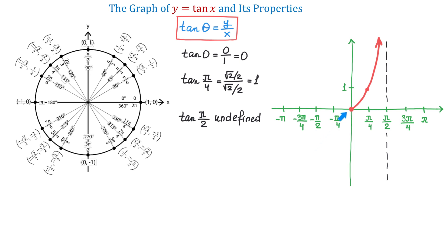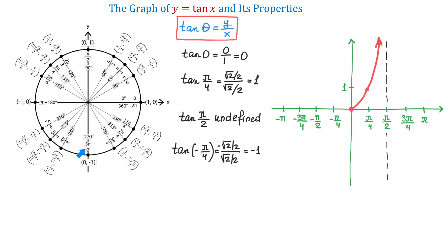Now, let's talk about the behavior of the tangent function to the left of the origin. On the unit circle, if from 0 we move clockwise, we will have negative angles. At negative pi over 4, we will divide negative square root of 2 over 2 by positive square root of 2 over 2, which equals negative 1. So, tangent of negative pi over 4 equals negative square root of 2 over 2 divided by square root of 2 over 2, which equals negative 1. Moving clockwise to negative pi over 2, if we divide negative 1 by 0, the tangent again will be undefined. So, tangent of negative pi over 2 is undefined.